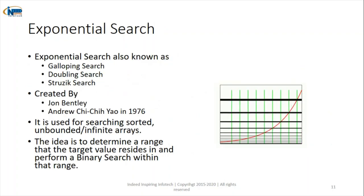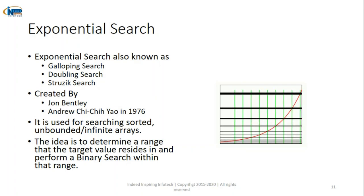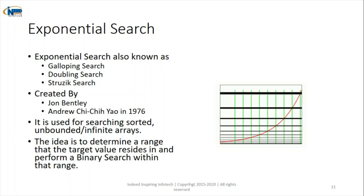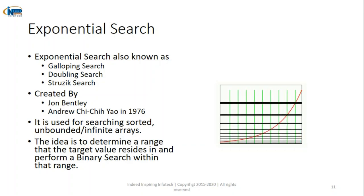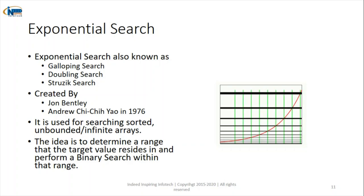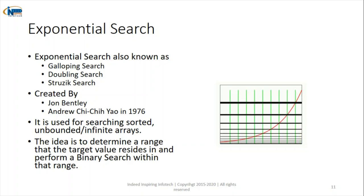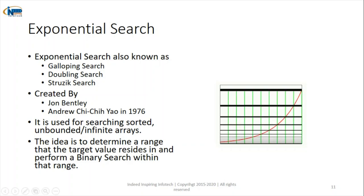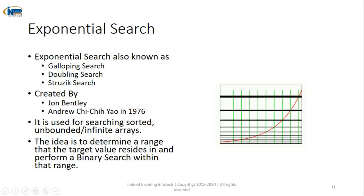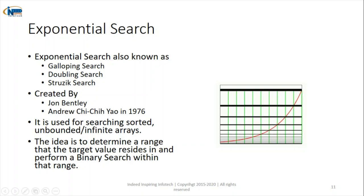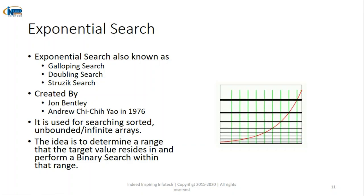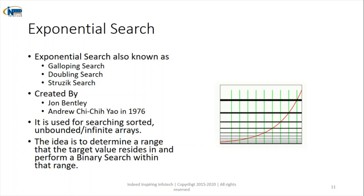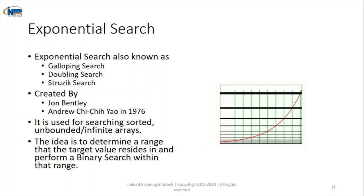The fifth algorithm is exponential search, also known as galloping search, doubling search, or strategic search. Initially we search a smaller number of elements, but in the next iteration the search space becomes larger. As shown in the diagram, the blocks start small and keep growing. Therefore it is known as galloping or exponential search, because the search space keeps on increasing.